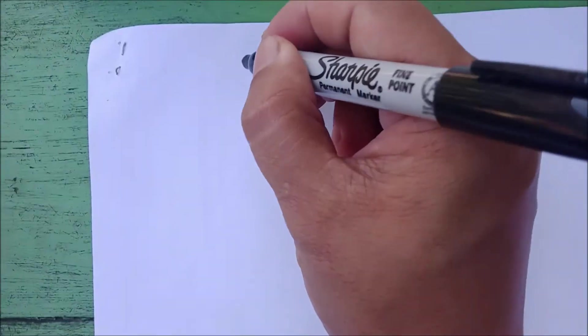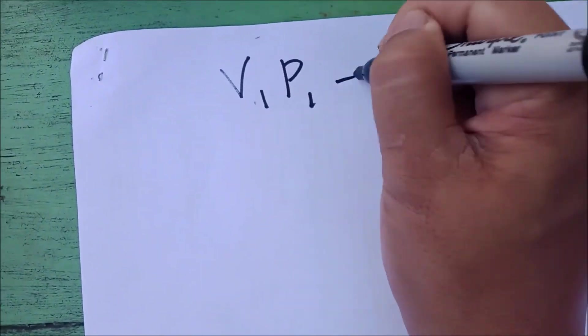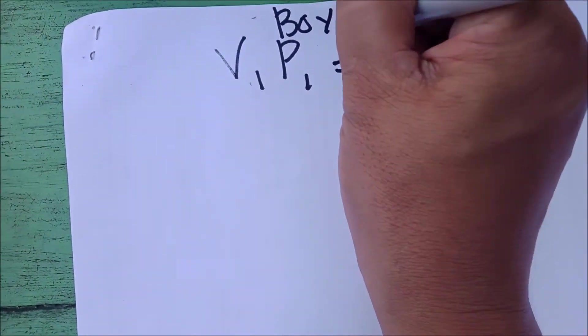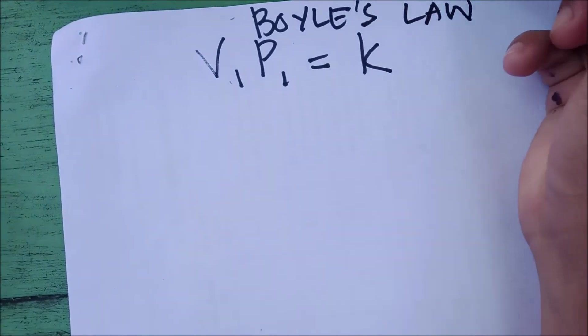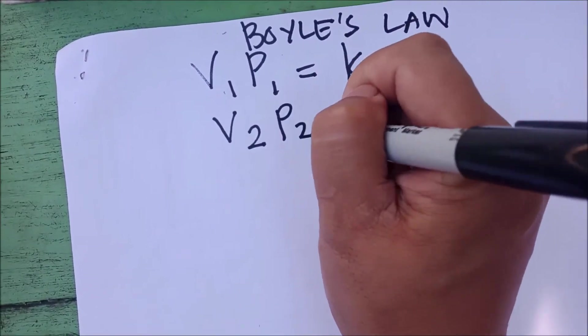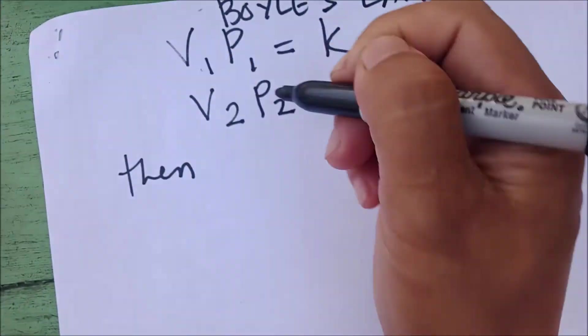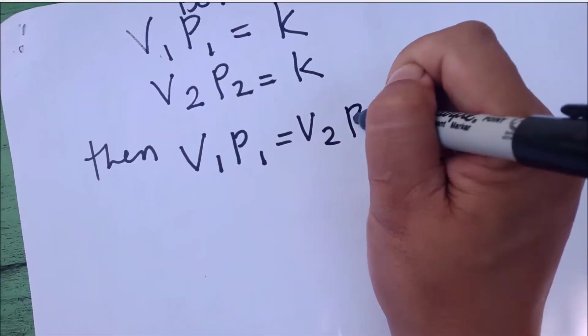If you're going to rewrite that formula, we can actually have V1, P1 is equal to K. This is Boyle's Law. Or we can also write V2, P2 is equal to K. Then, we can also write V1, P1 is equal to V2, P2.